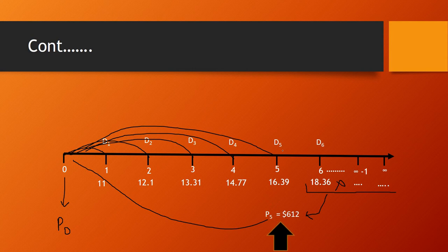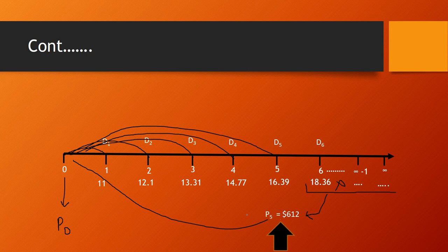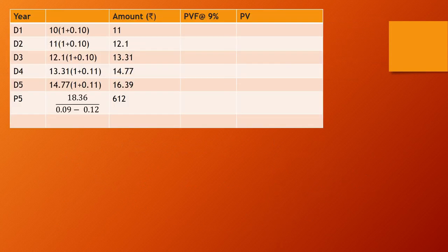The equation for P0 will be: P0 = 11/(1+r)¹ + 12.1/(1+r)² + 13.31/(1+r)³ + 14.77/(1+r)⁴ + 16.39/(1+r)⁵ + 612/(1+r)⁵. We will solve this using a tabular form. The cash flows at the end of years 1 through 5 are D1, D2, D3, D4, D5, and P5.